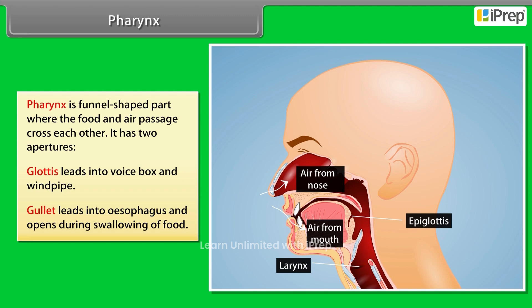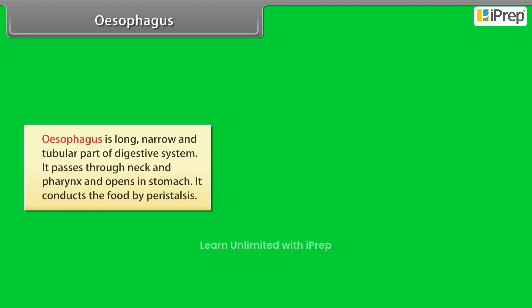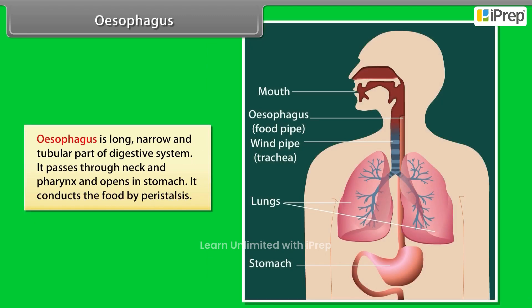The esophagus is a long, narrow, and tubular part of the digestive system. It passes through the neck and thorax and opens into the stomach. It conducts food by peristalsis.